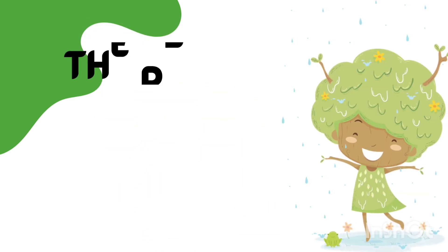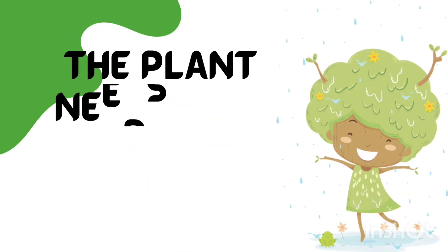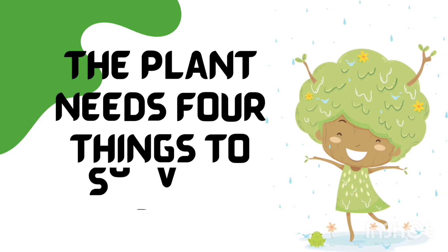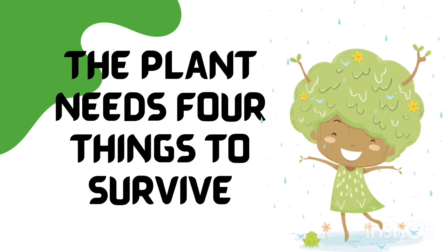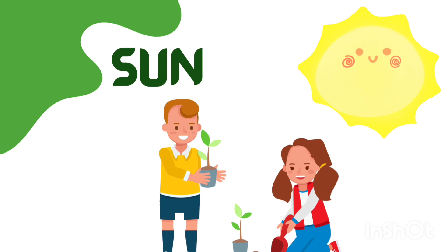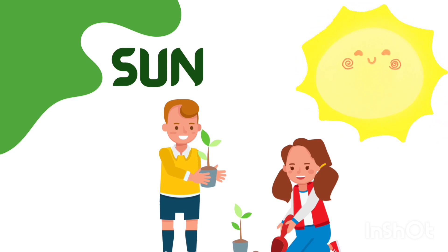The plant needs four things to survive. A plant needs the sun. The leaves of the plant love sunlight.